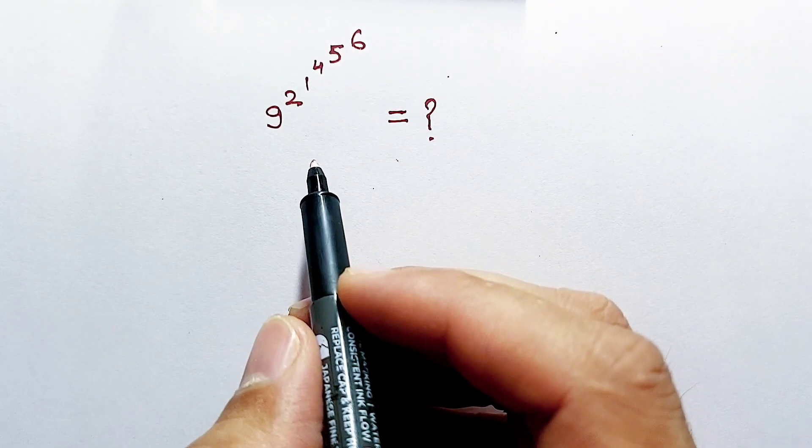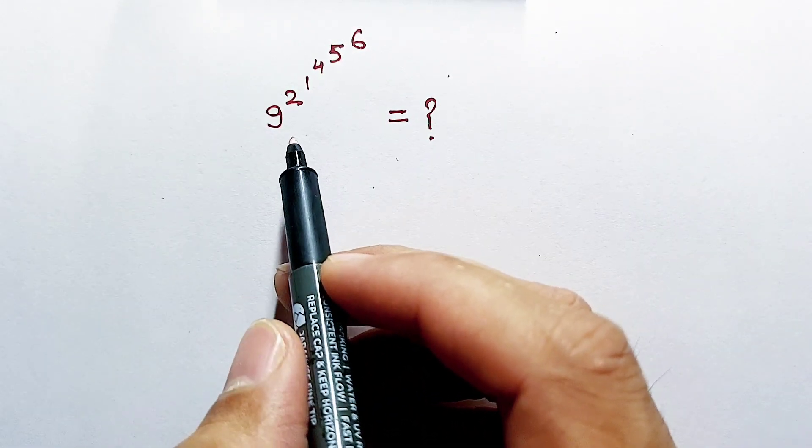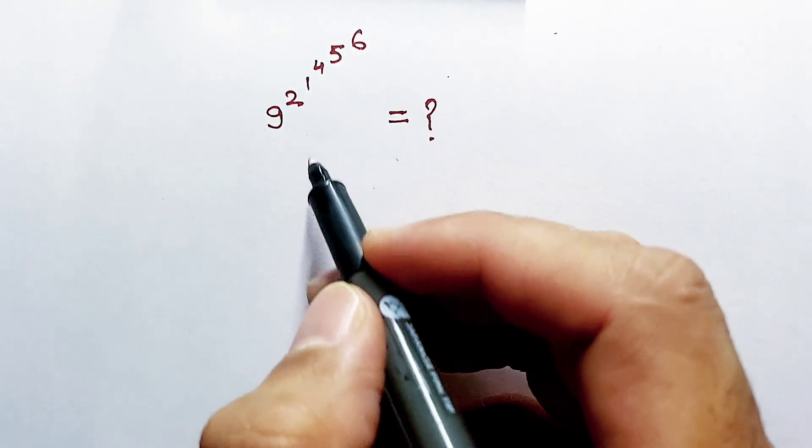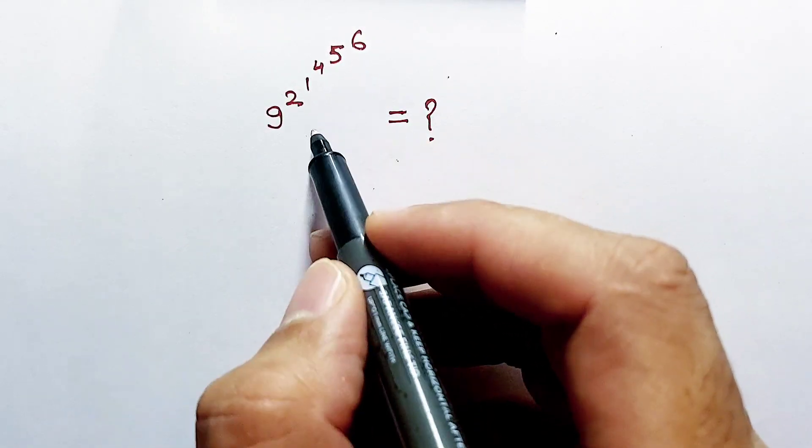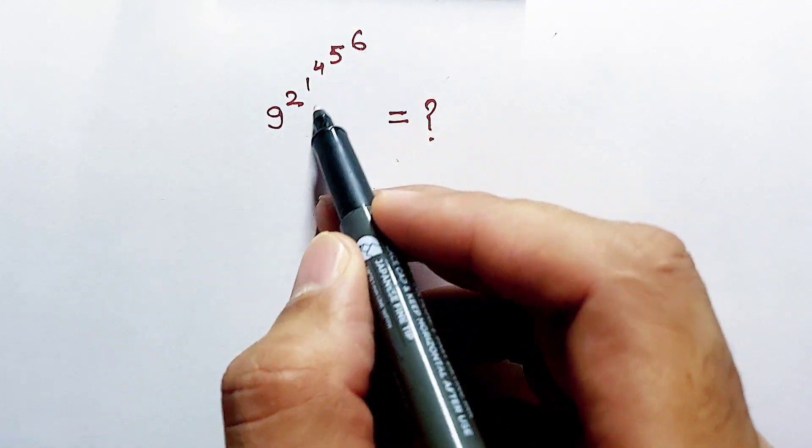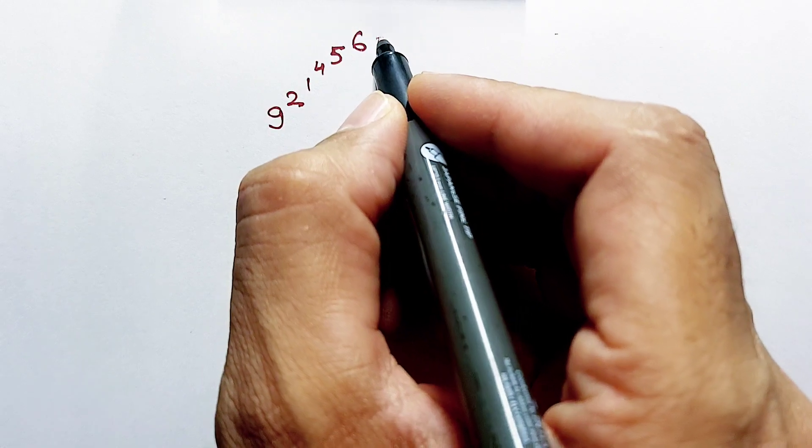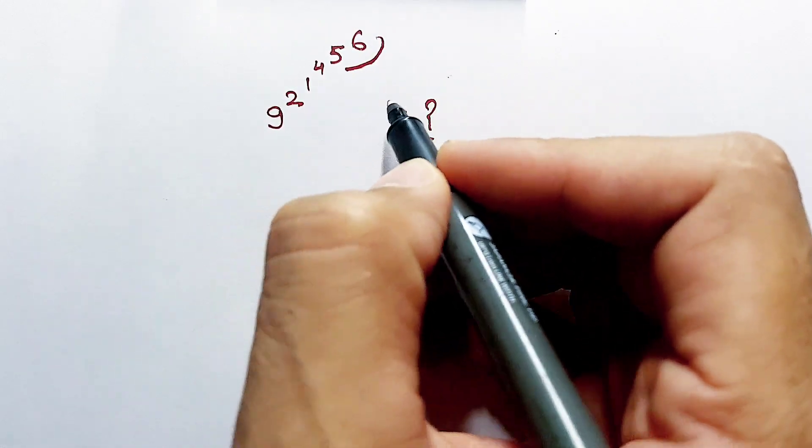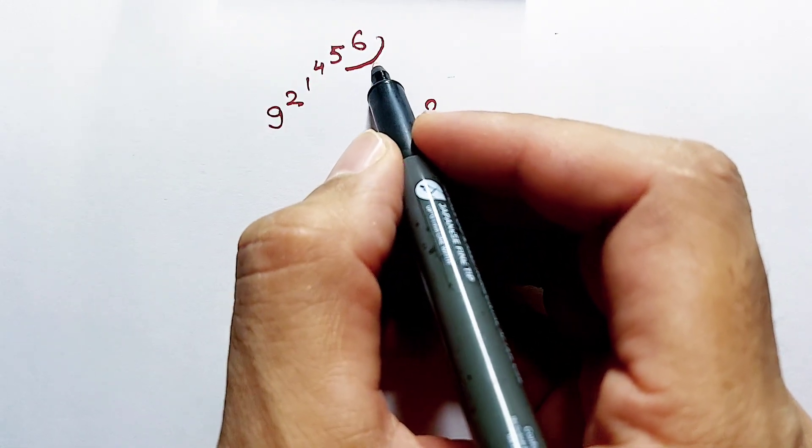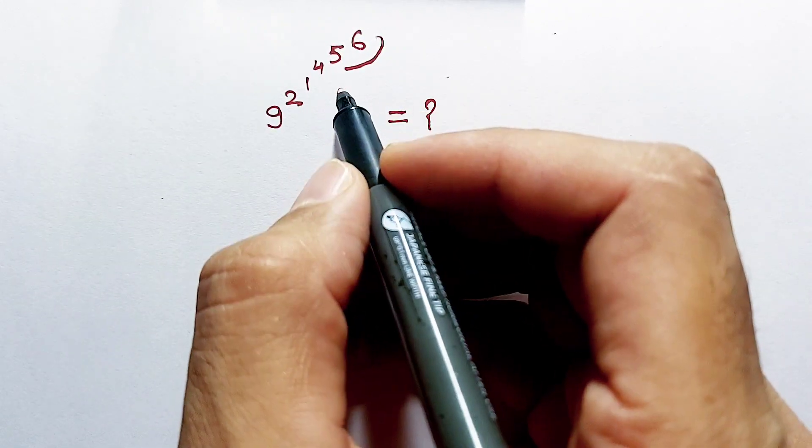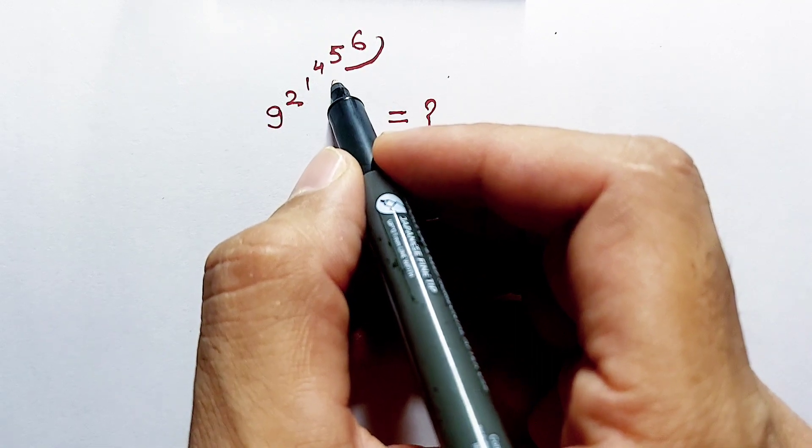Hello, today we have to solve this multiple power question. Let's solve it. These kinds of multiple power questions are solved from top to bottom. We have to solve first this part of the question, then we will find a number and that number will become the power of four, and so on. We have to solve from top to bottom.